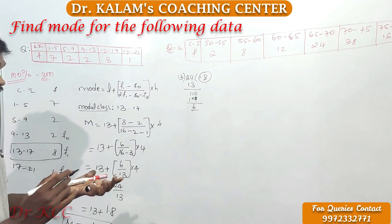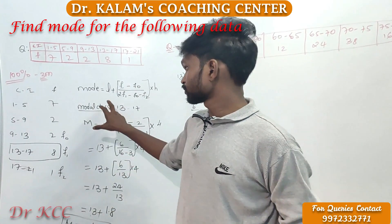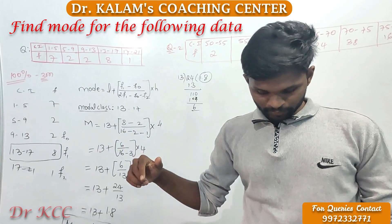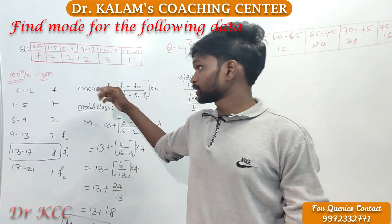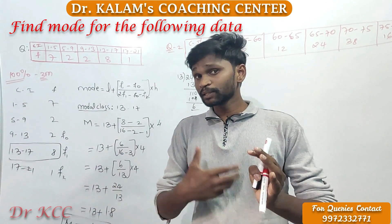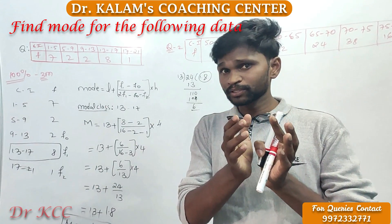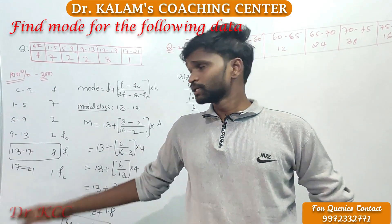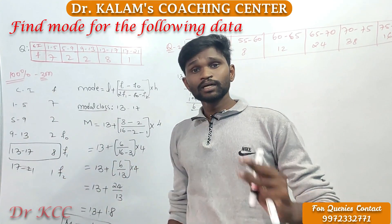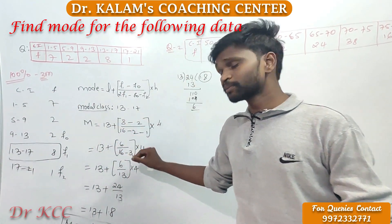Let me repeat the steps once more. First, rewrite the data. Second, find out the modal class — which group has the highest frequency, that becomes your modal class. Third, fix your frequencies labeling them F0, F1, F2. Then substitute those values into the formula and you will get the answer.